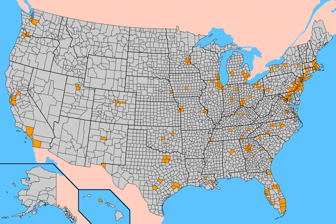Once the electoral college had been decided on, several delegates openly recognized its ability to protect the election process from cabal, corruption, intrigue, and faction. Some delegates, including James Wilson and James Madison, preferred popular election of the executive. Madison acknowledged that while a popular vote would be ideal, it would be difficult to get consensus on the proposal given the prevalence of slavery in the South. The convention approved the committee's electoral college proposal, with minor modifications, on September 6, 1787.